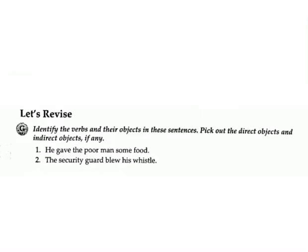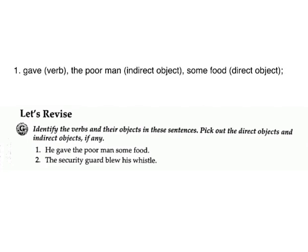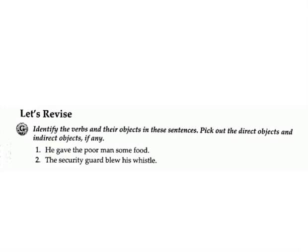Let's revise. Exercise G: Identify the verbs and their objects in these sentences. Pick out the direct objects and indirect objects, if any. 1. He gave the poor man some food. Answer: gave — verb; the poor man — indirect object; some food — direct object.